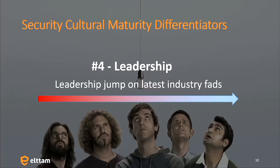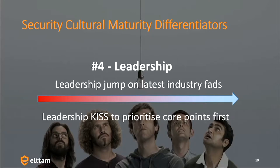The final one is leadership. When you see leadership running at the latest fads, it's a really bad sign. On the flip side are people who just keep it simple first. If you're trying to do something with AI or something like that, you maybe want to sit back for a year or two, see how it plays out in the industry, then hire the person who did it really badly and failed — and then did it really well because they learned their lesson. Those are the four main distinguishers.